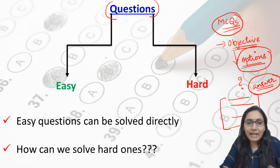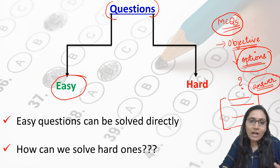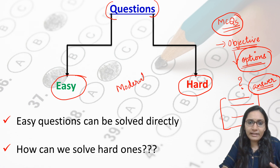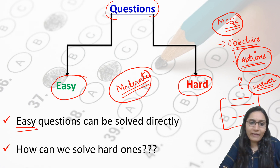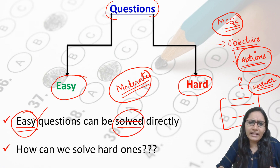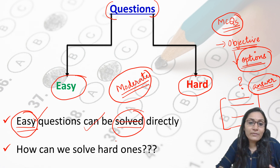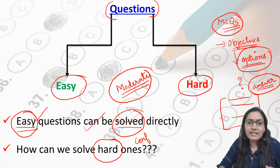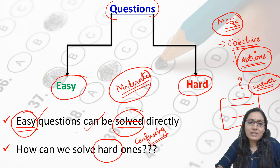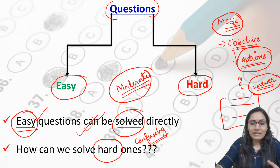Questions can be easy, hard, or moderate. If questions are easy and you have prepared well, you can solve them directly. The problem arises when questions are hard — meaning the options are confusing or very close to each other. In such situations, we need specific techniques to crack the MCQs.